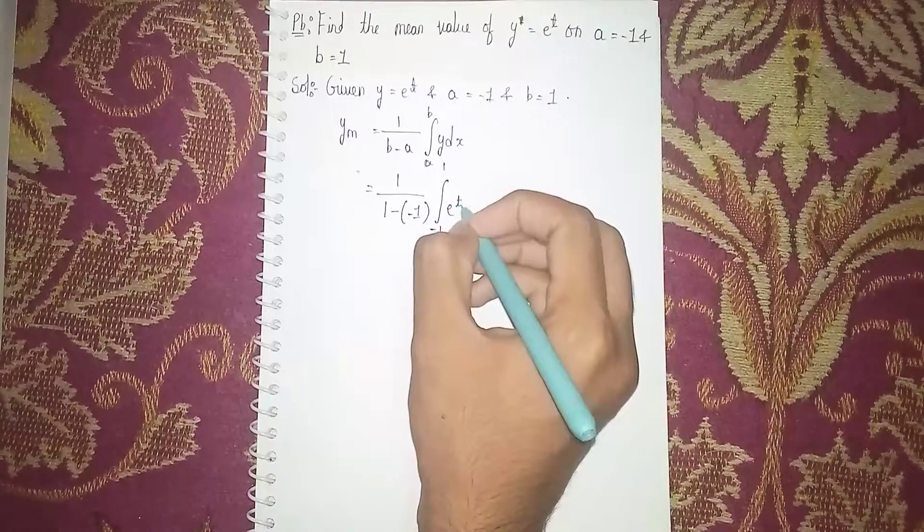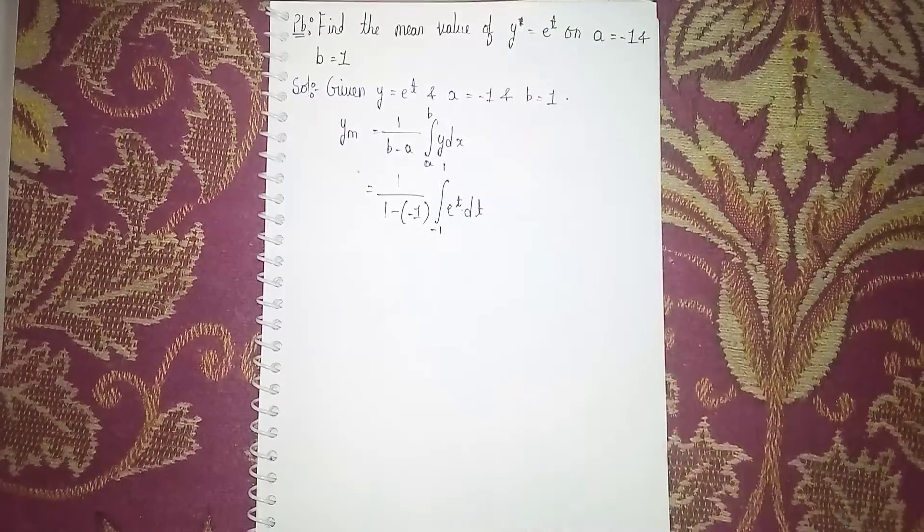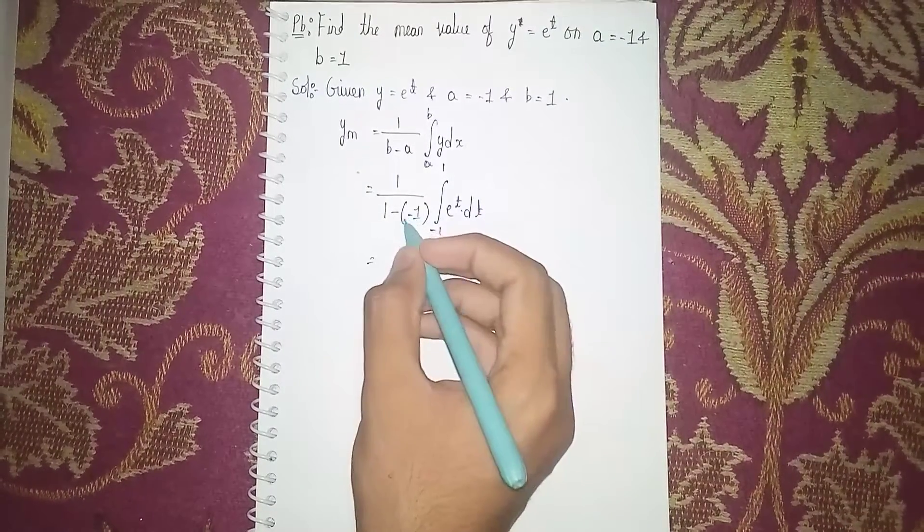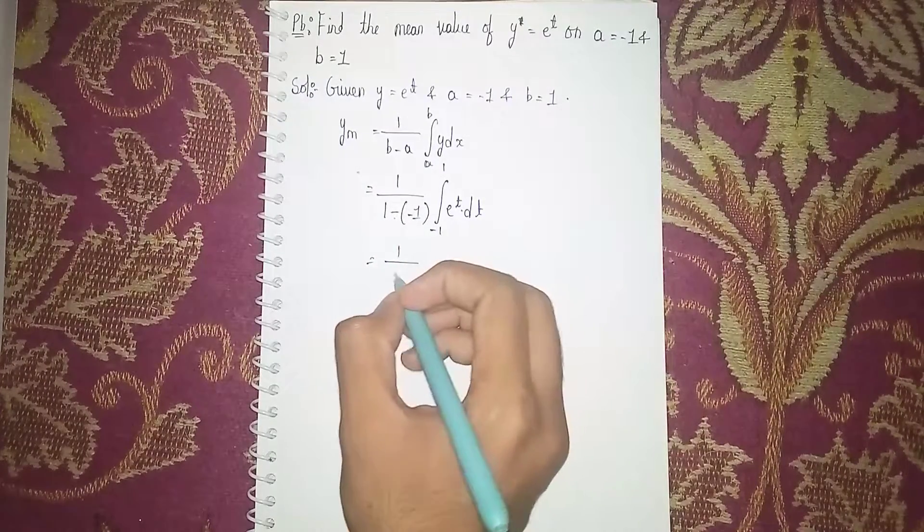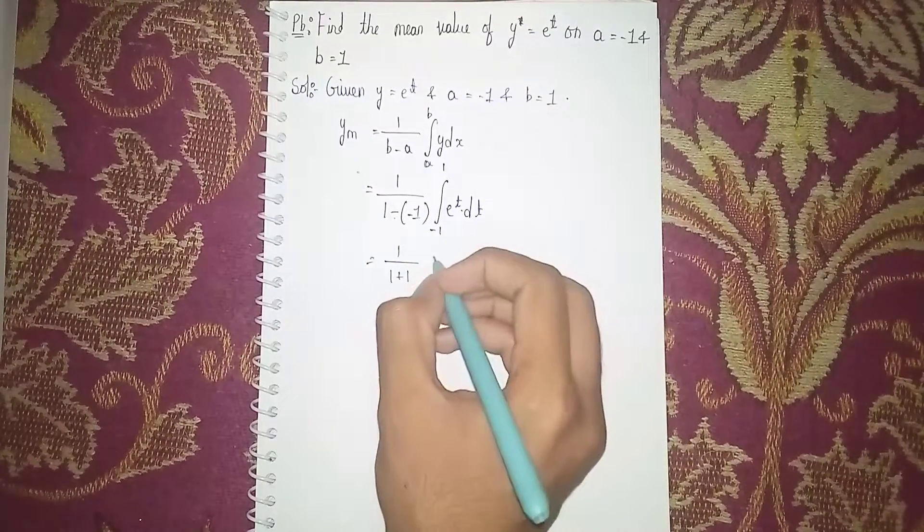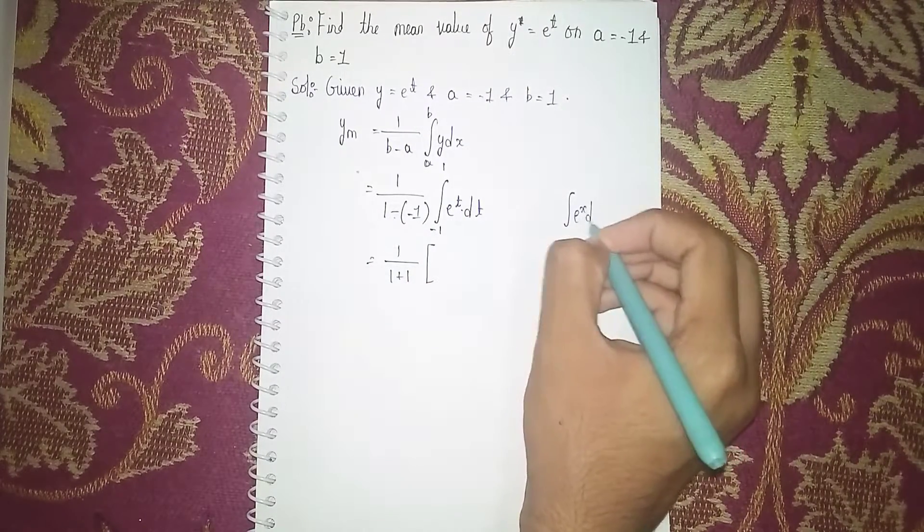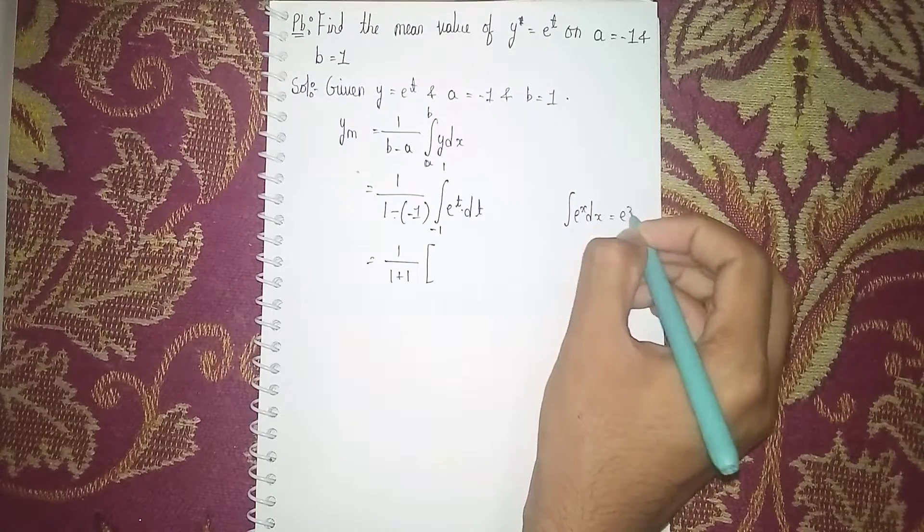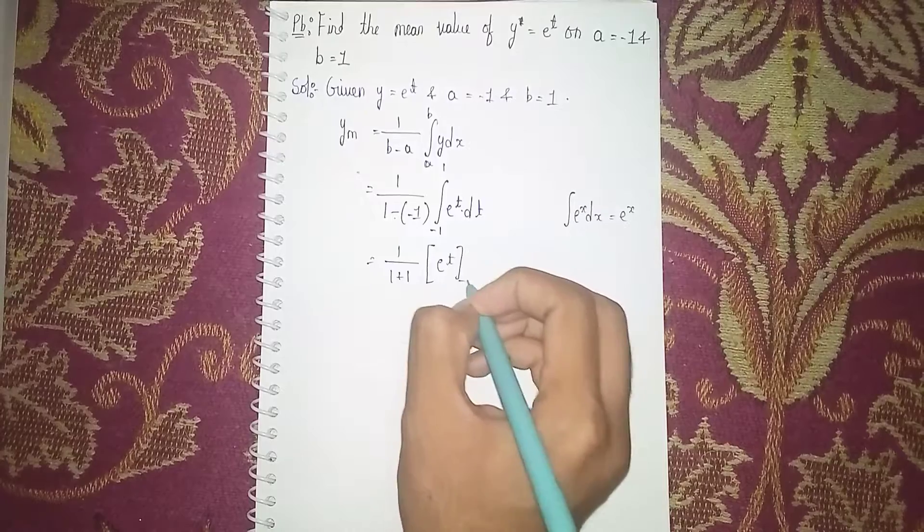Now we are differentiating with t, so it becomes dt. Now here see, it becomes 1 by, minus minus plus, so 1 plus 1 is 2. Now integrate, so it is in the form of integrate e power x. Integral of e power t is equal to e power t.